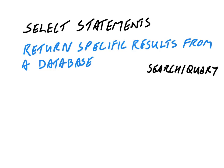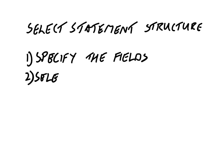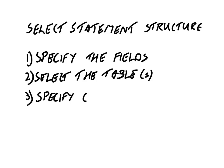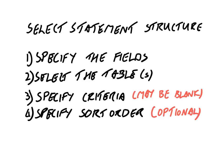SELECT statements have a particular structure. First, you specify the fields that you want. You then select the table you want them from — there may be more than one table. Then you specify the criteria, and optionally you may specify a sort order. The sort order is optional; you do not need it. And sometimes your criteria may be blank if you just want to display every record in the database.